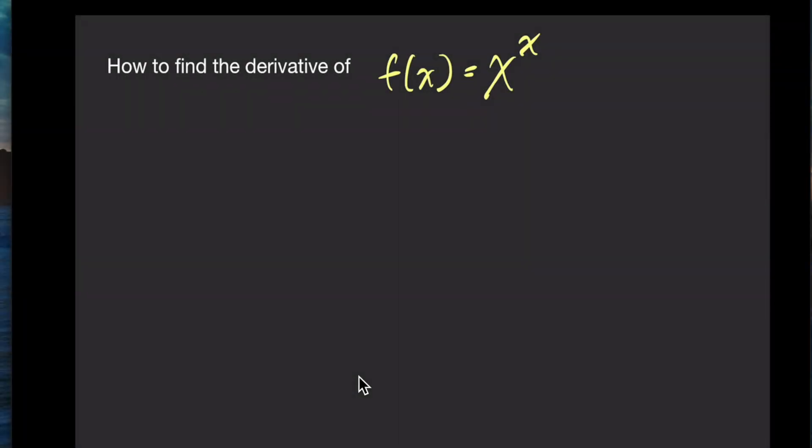In our second method, we're going to use logarithmic differentiation. So the first thing we're going to do is change f of x to y. And we're going to say that y equals x to the x. We're then going to take the natural log of both sides. So we're going to have the natural log of y equals natural log of x to the x. We're then going to use the log properties and bring that x out front. And we're going to have ln of y equals x times ln of x. Now folks, we're going to take the derivative with respect to x on both sides.